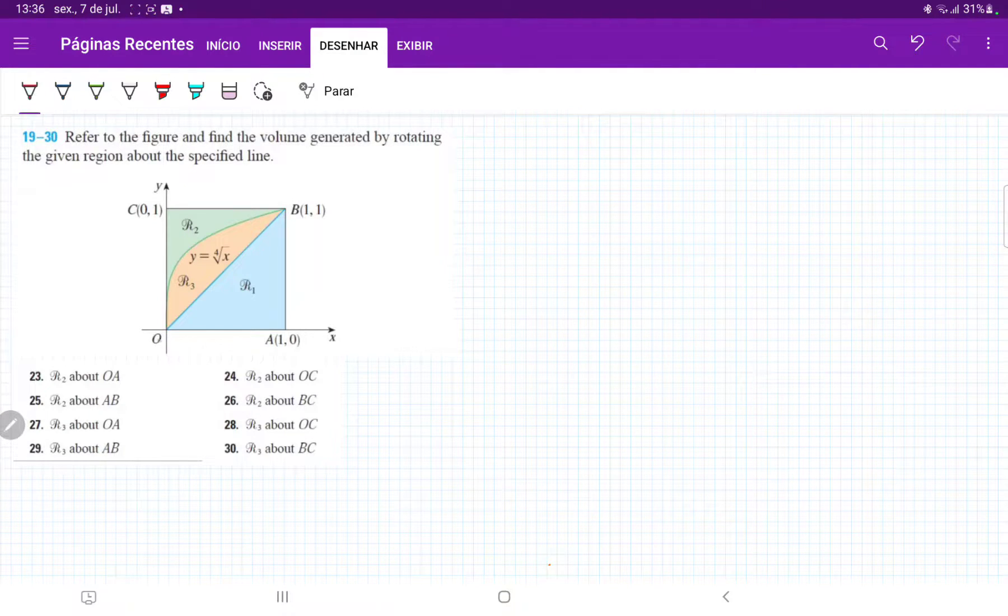Well, the first thing is to realize that since we're rotating it about OA, we're summing up these disks across the x-axis, right? These disks are going to go like this. So if we're summing up these disks across the x-axis, we're integrating with respect to x, and then we're going from 0, which is the origin here, to 1. So our integral goes from 0 to 1.